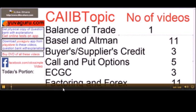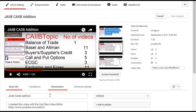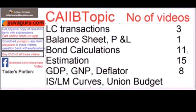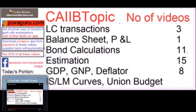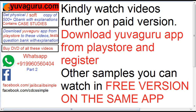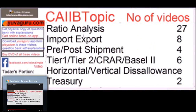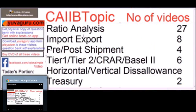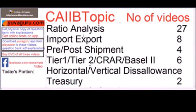Additional topics available include LC transactions, balance sheets, P&L, bond calculations, estimation, GDP, GNP deflator, ISLM curves, union budget, Keynes theory, ratio analysis, import-export, pre and post shipment, tier 1 and tier 2 capital, CRAR, Basel 2, horizontal and vertical disallowances.